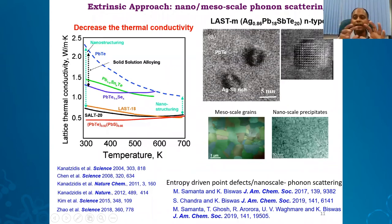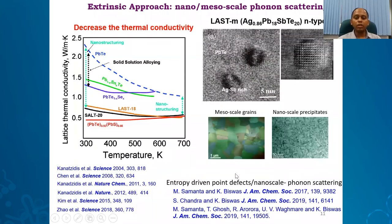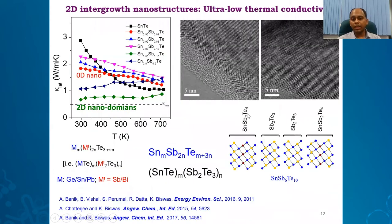These nanostructures are embedded in a bulk matrix. Later, important papers showed that not only nanostructures, but if you can create hierarchical nano-meso architectures — atomic point defects, nano precipitates, and grain boundaries — you can scatter the full range of phonons and achieve third-generation ZT of 2.2 in 2012. We contributed significantly to this field from Bangalore. More importantly, we showed for the first time that two-dimensional nanostructures — corrugated-type structures — embedded in a matrix are more efficient than zero-dimensional nano precipitates at scattering phonons, which is well appreciated in the field.